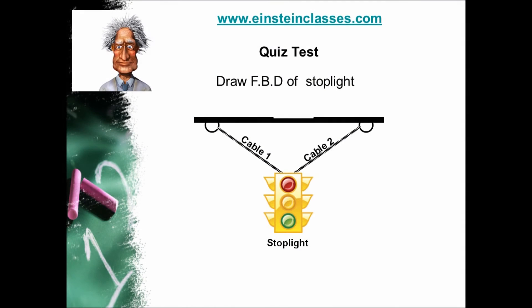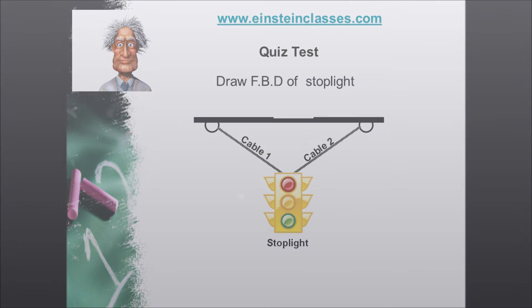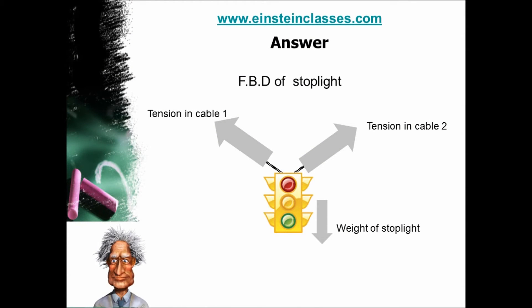I think that now you are able to draw FBD. Yes, why not? You are intelligent enough and I am a good instructor. Take a quiz test. A traffic light is suspended by two cords as shown in figure. Draw the FBD of this stoplight. Good job if you are correct. But if you are incorrect, do not worry, just correct your concept due to which your thinking process is wrong.